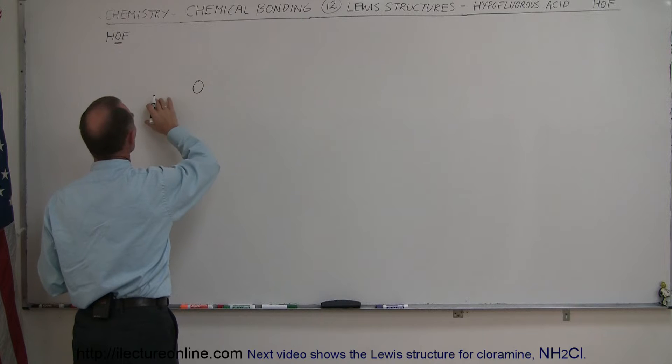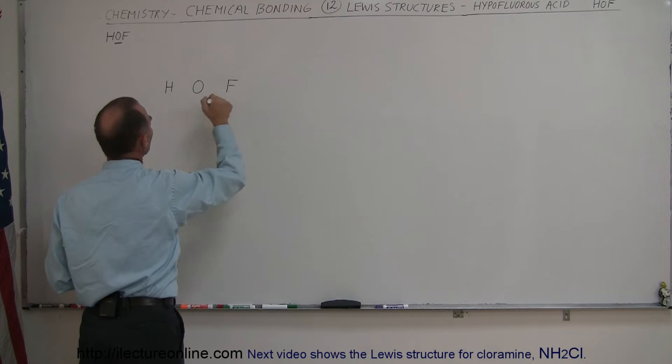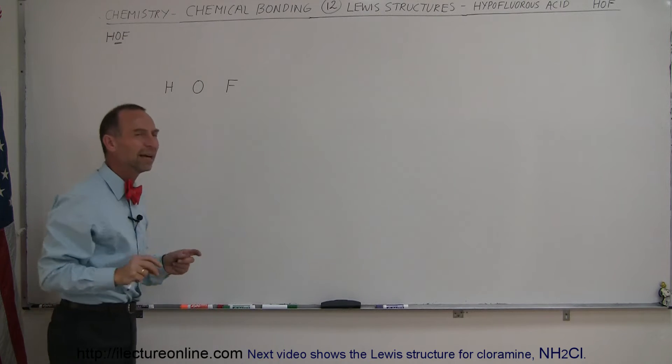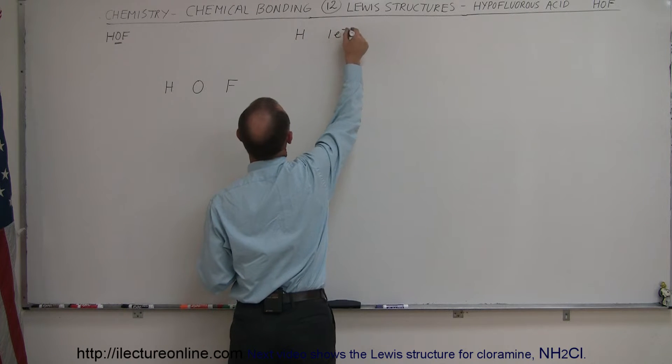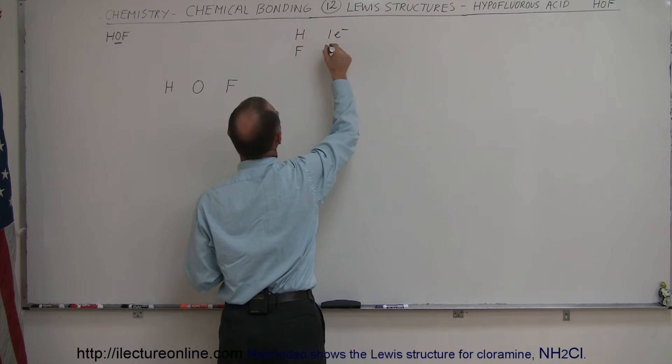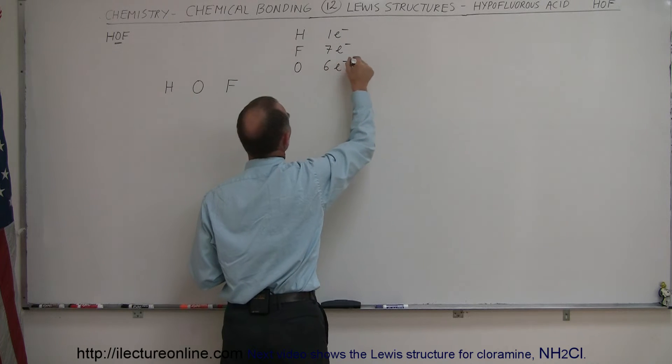Hydrogen is going to be an appendage, and so we'll probably place that over here and fluorine over there. Now it could be that hydrogen may be on the other side and bound with fluorine. However, take a look. We know that hydrogen has one valence electron. We know that fluorine has seven valence electrons, and oxygen has six valence electrons.